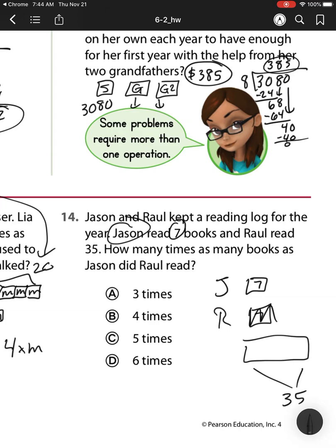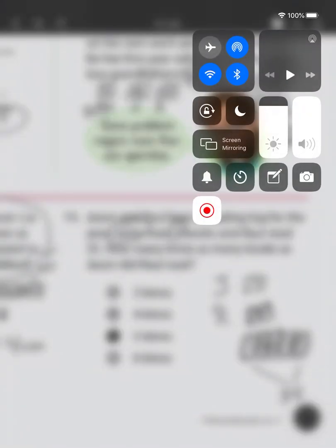Well, we know Raul is at 35. So we're breaking up into groups of 7. So that would be 7, 14, 21, 28, 35. So it is 3, I'm sorry, it is 5 times as many. Okay. All right.